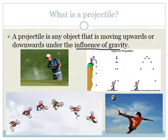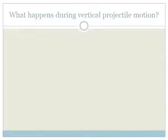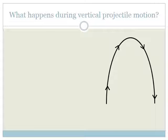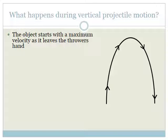You need to know that vertical projectile motion generally follows the form of a parabola. So what happens during vertical projectile motion? First of all, it follows a parabolic path where the initial velocity is the velocity at which the object leaves the thrower's hand, and that is going to be a maximum. Remember that velocity is a vector, so we have to give a direction. The initial velocity is upwards and it is at a maximum.